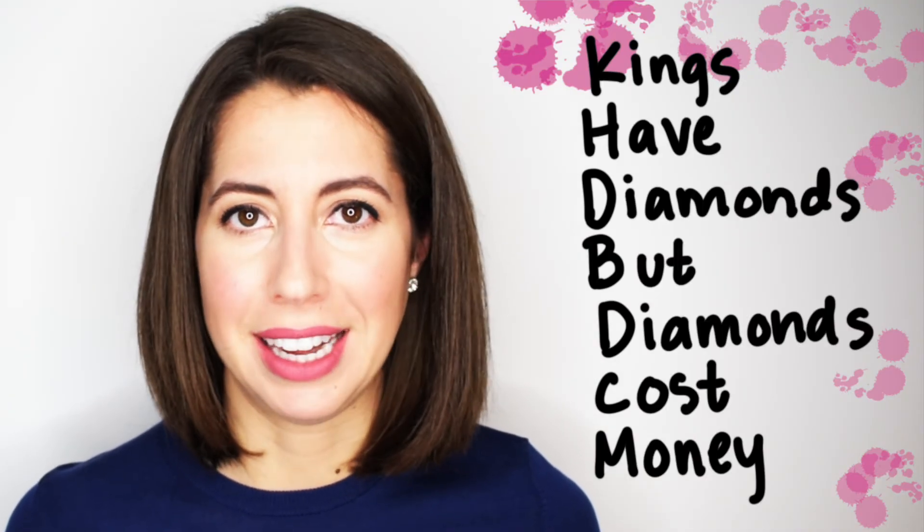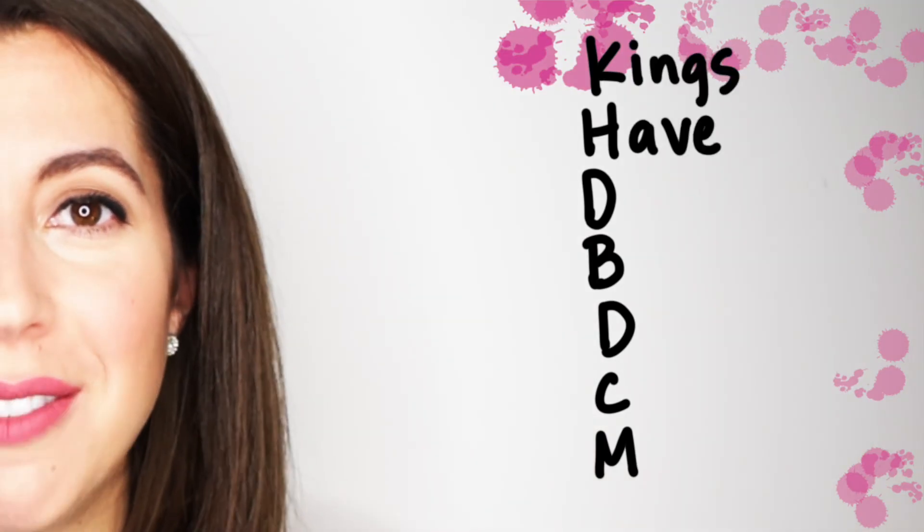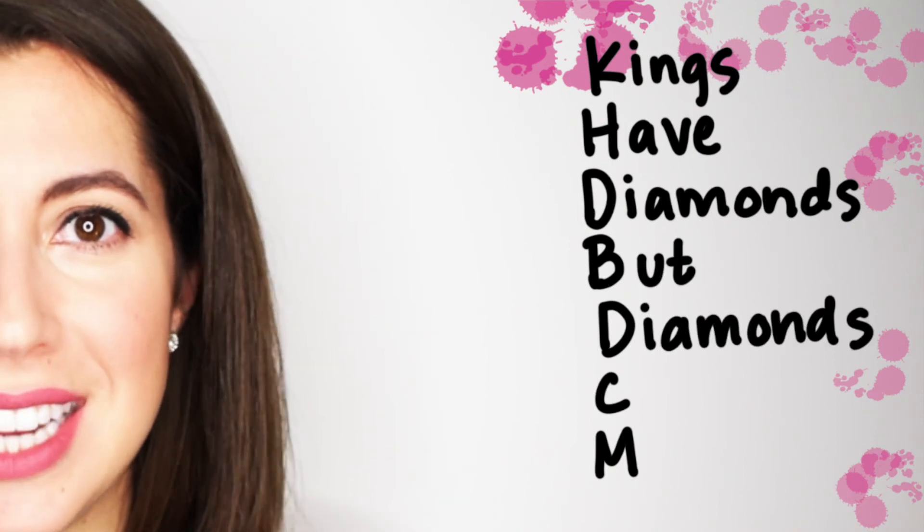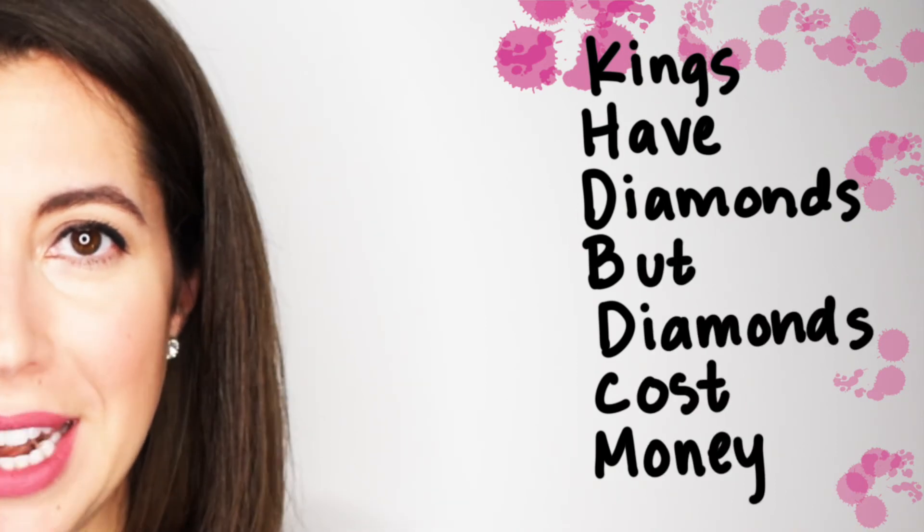Here's a mnemonic device to help you remember the metric prefixes. Are you ready? Kings have diamonds, but diamonds cost money. Kings have diamonds, but diamonds cost money. So if you write out the first letter of each of the prefixes, you can convert starting from there. Take a look.